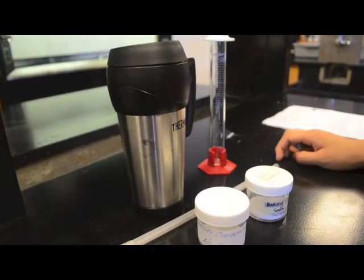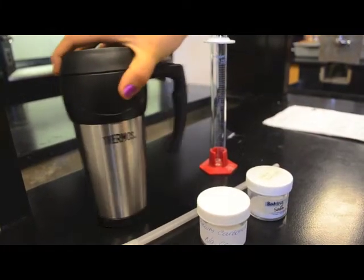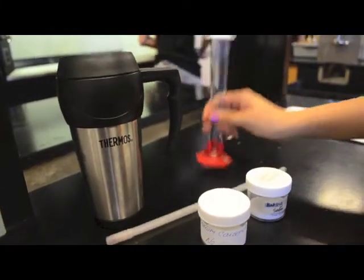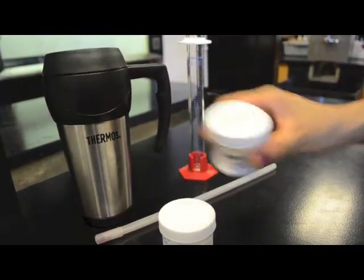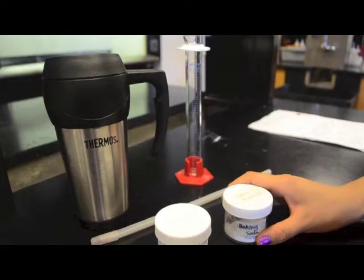Alright, so this is the lab station for Lab 16 Hess's Law. We have our thermos here, we have a thermometer, we have a graduated cylinder, we have sodium carbonate and sodium bicarbonate, and we have our one molar hydrochloric acid in the hood.